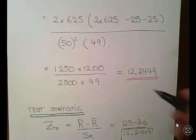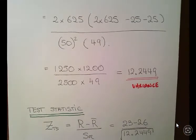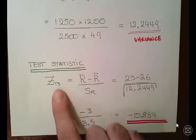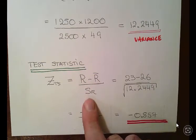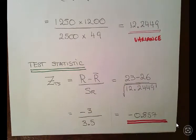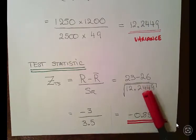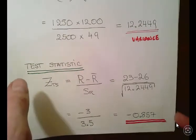So the test statistic is essentially it's a Z random variable. That's the observed number of runs minus the expected number of runs over the standard deviation which is the square root of the variance. So we have 23 minus 26 over the square root of 12.2449. So we have minus 3 over 3.5, and the test statistic is minus 0.857.